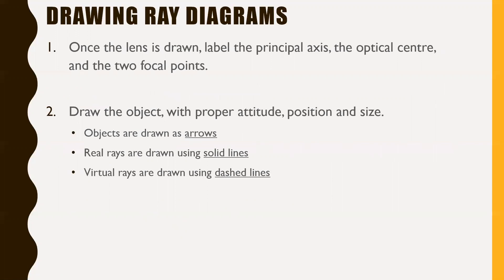For drawing ray diagrams for lenses, once the lens is drawn, label the principal axis, the optical center, and the two focal points — your primary one and your secondary one. That's step one. Step two is to draw the object with proper attitude, position, and size. Objects are drawn as arrows. Real rays are drawn using solid lines, and virtual rays are drawn using dashed lines — the same as before.